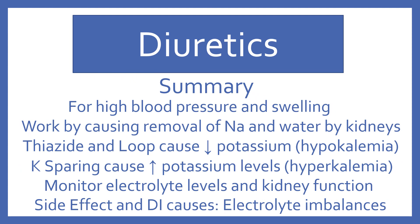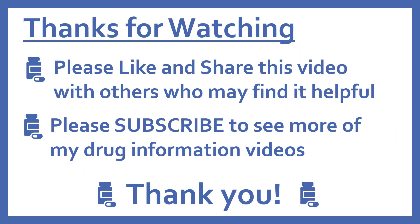In summary, diuretics are for high blood pressure and swelling, and they work by causing removal of sodium and water by the kidneys. Thiazide and loop diuretics cause decreased potassium, known as hypokalemia, while potassium-sparing diuretics cause increased potassium levels, known as hyperkalemia. It is important to monitor electrolyte levels and kidney function in patients taking diuretics, as many side effects and drug interactions are due to electrolyte imbalances.